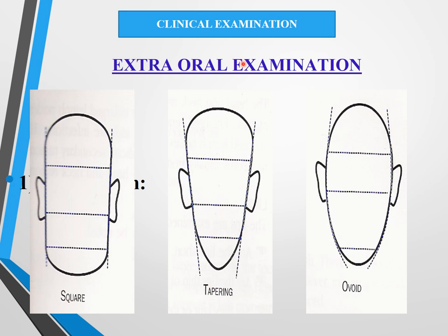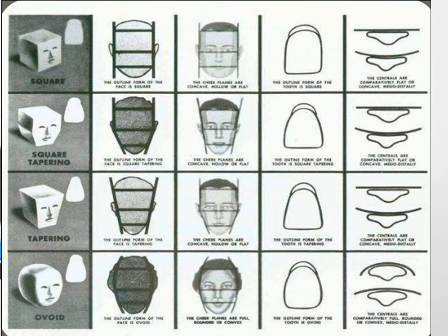Coming to clinical examination: starting with extraoral examination, you need to know the shape of the face — square, tapering, or ovoid. These shapes are important because they help in teeth setting and selection: a squarish face gets squarish teeth, a tapering face gets tapered teeth, and so on. Gender also influences this selection.